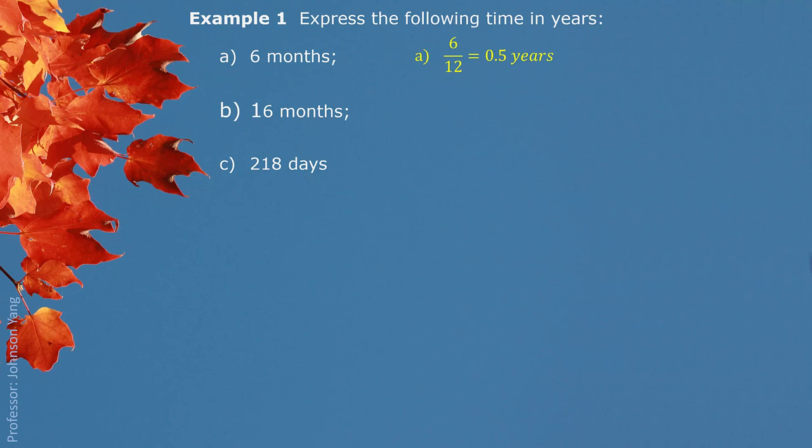When we switch 6 months to years, we look at the relationship between months and years: 1 year equals 12 months. So we use 6 divided by 12, which gives us half a year. Similarly, 16 divided by 12 gives us 1.333 repeating years. We take the standard of 1 year equals 365 days, so 218 days divided by 365 gives us 0.597 years.